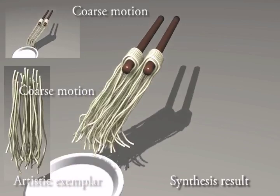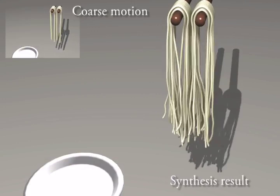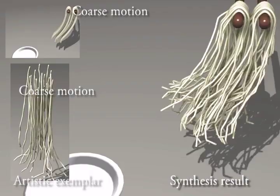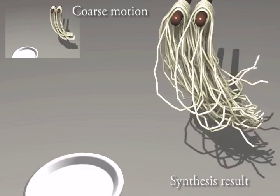Here we apply our method for dynamic spaghetti. Given a simple coarse output motion and an exemplar with realistic detailed motion, we can produce a realistic output. Our method can even take artistic exemplar such as jaggy motions.